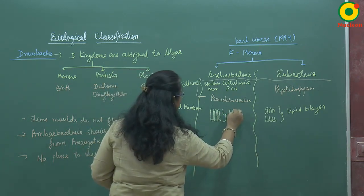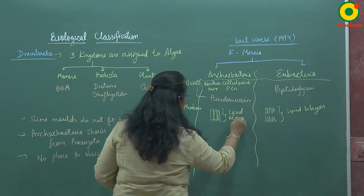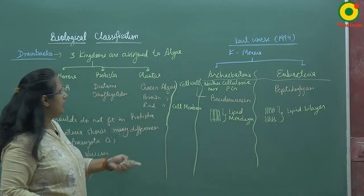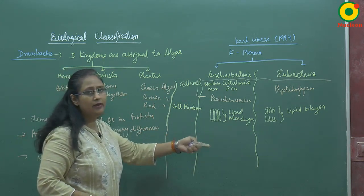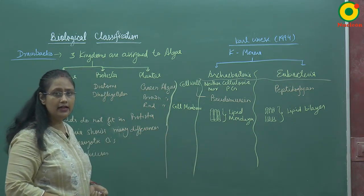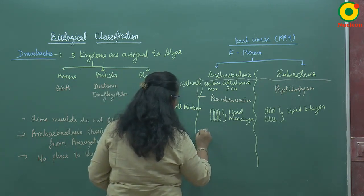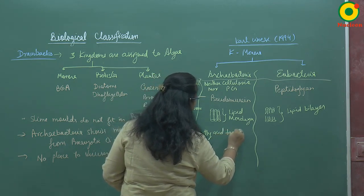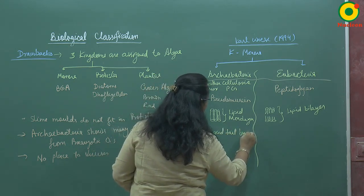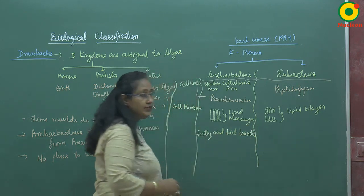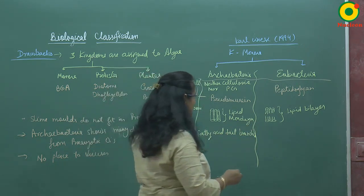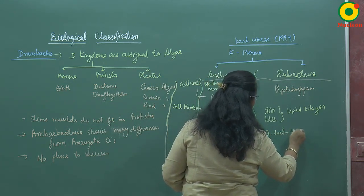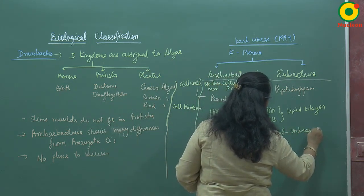So the cell membrane of Archaebacteria has a lipid monolayer. In Archaebacteria, the fatty acid tails are branched, whereas in Eubacteria, the fatty acid tails are unbranched.